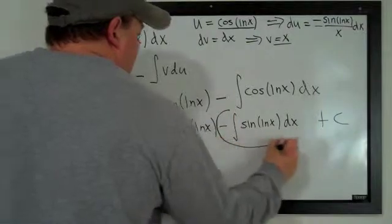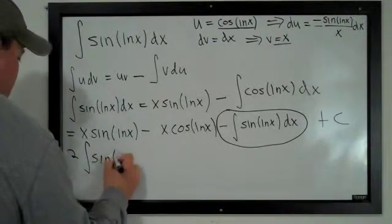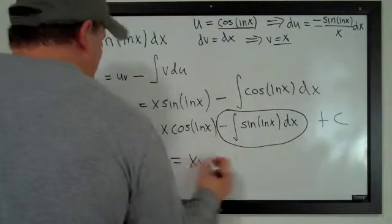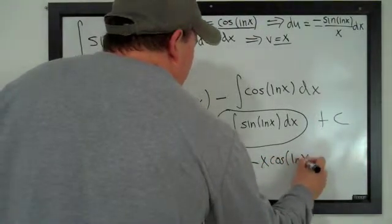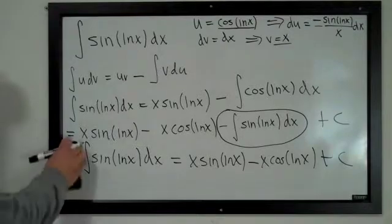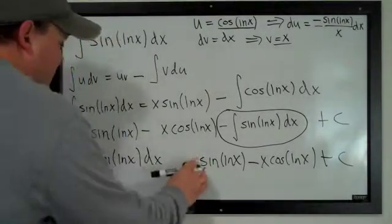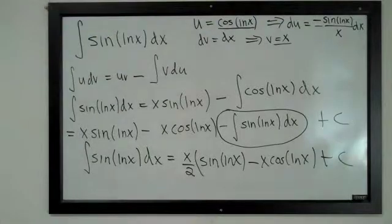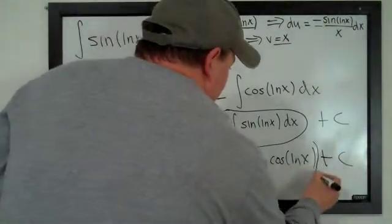We can add the integral term to both sides. When you do that, you get 2 times the integral of sine of log x dx equals x sine of log x minus x cosine of log x plus the constant of integration. To get the answer, just divide both sides by 2. You find that the integral of sine of log x equals x over 2 times sine of log x minus cosine of log x, plus the constant of integration.